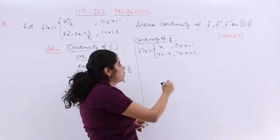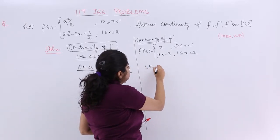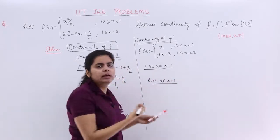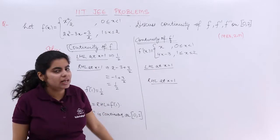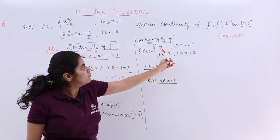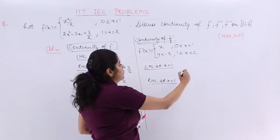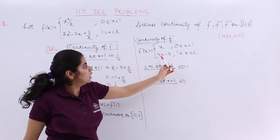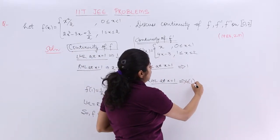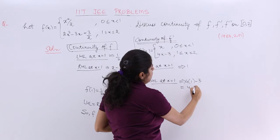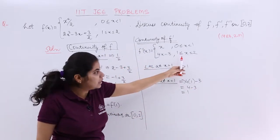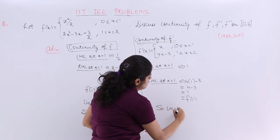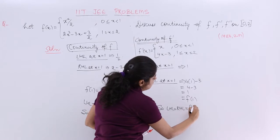You have to check now the continuity of f' at again x equals 1. So what about LHL at x equals 1? What about RHL at x equals 1? LHL at x equals 1 means here. When you put the value 1, you get 1. So the answer is 1. What about here the RHL? Put it in 4x - 3, 4 into 1 minus 3, 4 minus 3 makes it 1. And what about the value? f'(1) is again that only which is equal to f'(1).